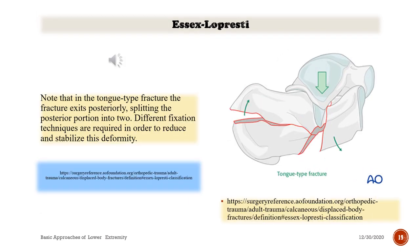In the tongue type fracture, the fracture exits posteriorly, splitting the posterior portion into two. Different fixation techniques are required in order to reduce and stabilize this deformity.